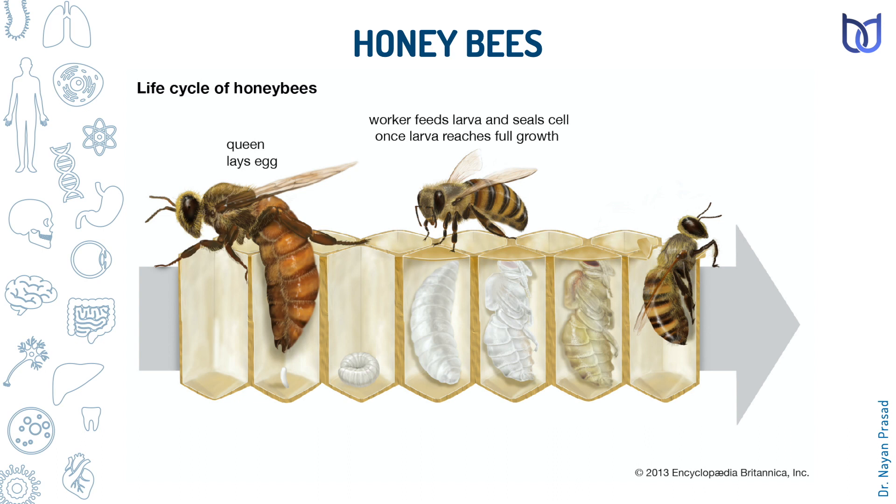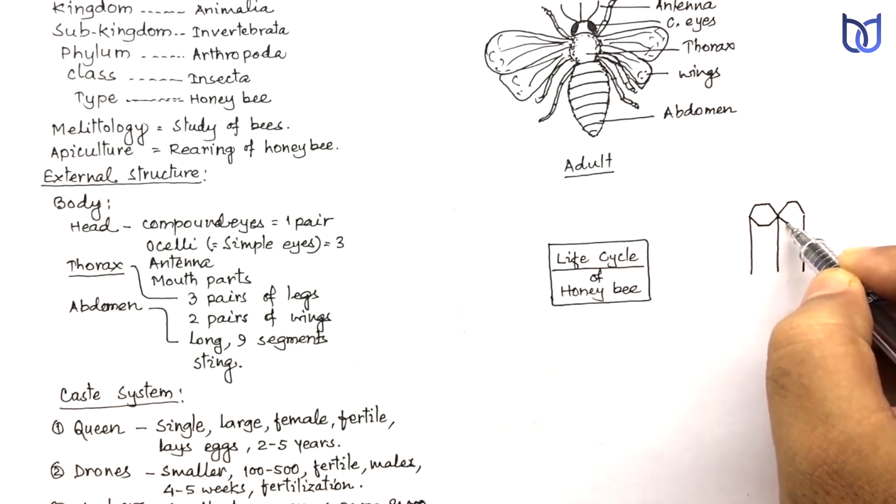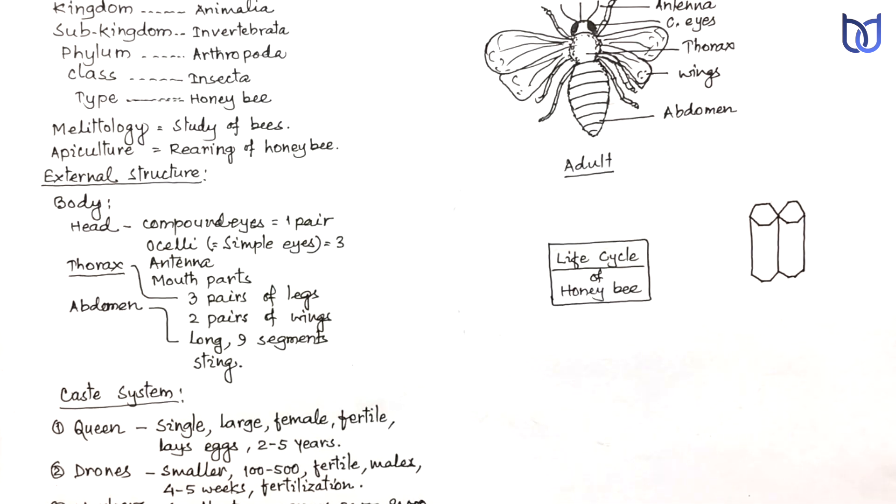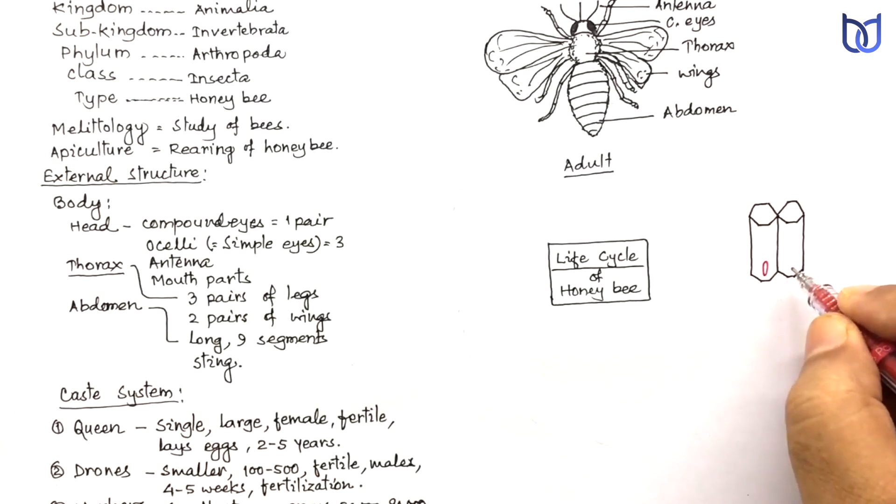Eggs are small, white, pinhead-sized, elongated structures. In a beehive there are a number of elongated hexagonal chambers called cells. One egg is laid inside each cell. The eggs are small and elongated, minute structures.